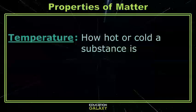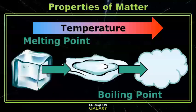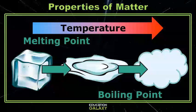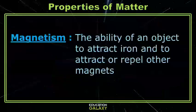An object's state of matter depends on temperature, or how hot or how cold the item is. Different substances have different melting points, or when they change state from a solid to a liquid, and different boiling points, or when they change from a liquid to a gas.